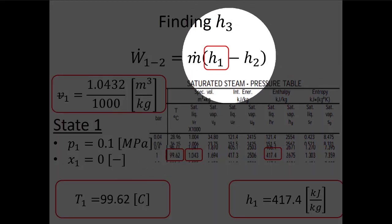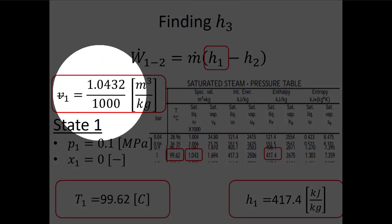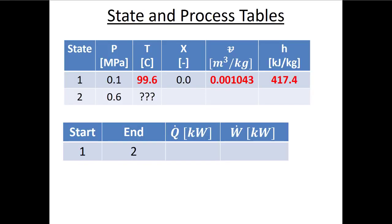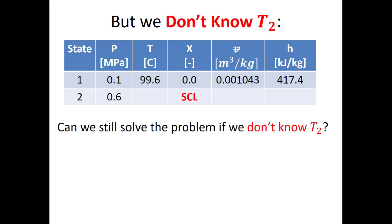From the FE handbook saturation tables at one bar (0.1 MPa): H_f = 417.4 kJ/kg, temperature = 99.62°C, and I can also look up the specific volume (noting values are multiplied by 1000 in the table, so divide by 1000 for the real value). This fills in state 1 of my state table. But this doesn't help much because I still don't know state 2. There's no way to fix the state without making an assumption.